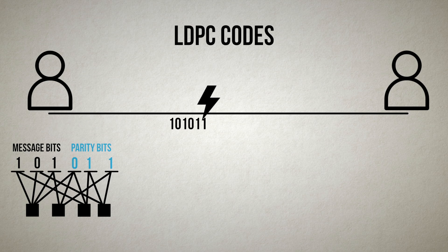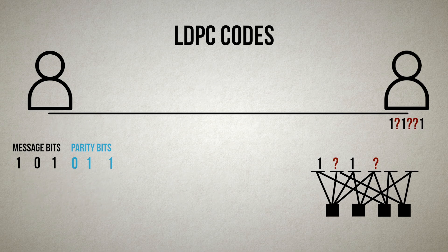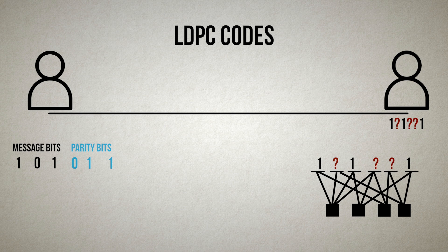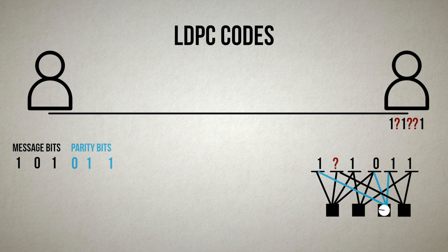Now imagine our message is received with three erasures as follows. To decode this message, we begin with the check sets that have a single erasure first, such as this one, and we repeat this process for every check bit until there are no more erasures left. That's one way the iterative process can work using low density parity check codes.